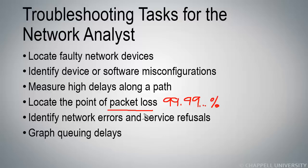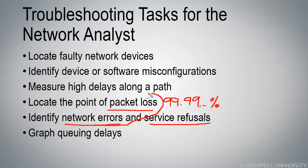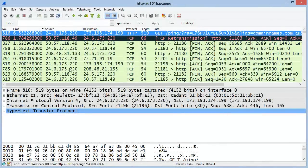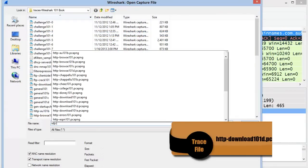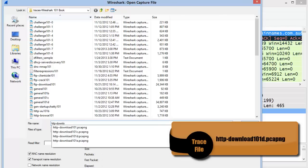We also look for various other types of network errors or any service refusals from an application. Let me take you out to another trace file where we'll look for network errors and packet loss. I'll open up a trace file called http-download101d.